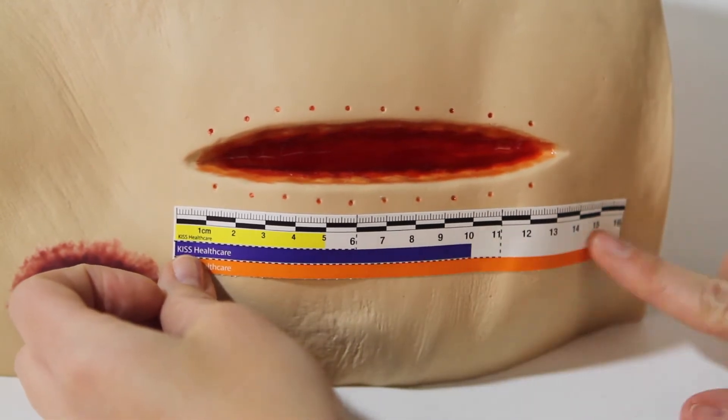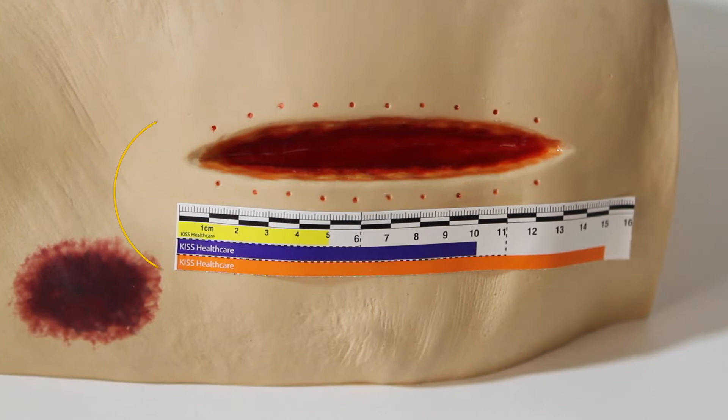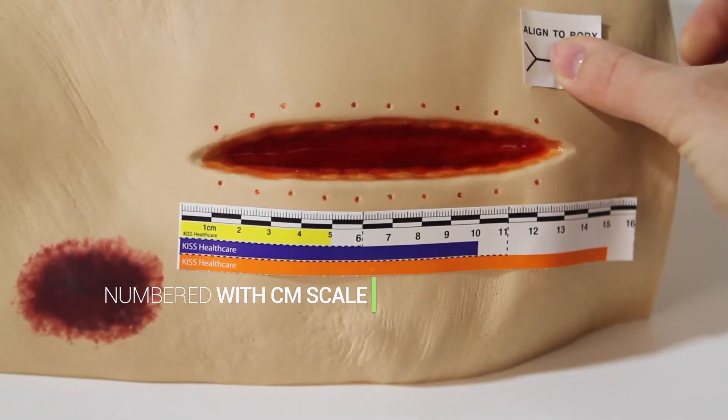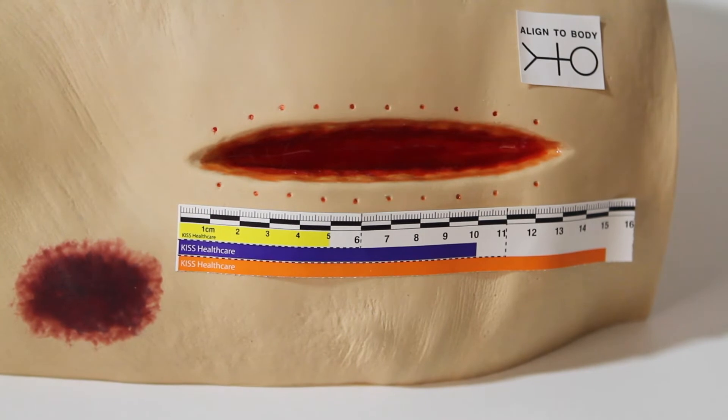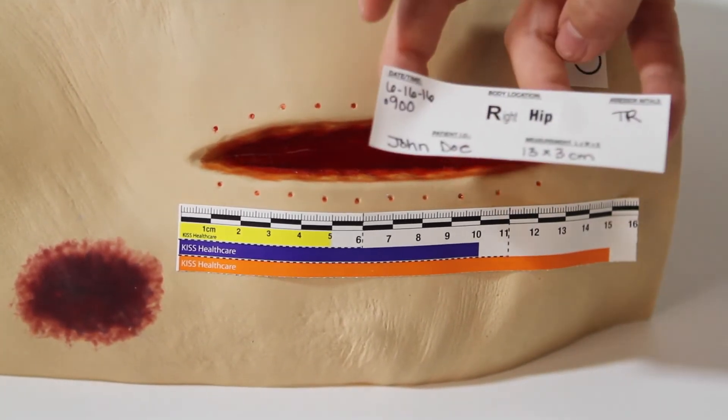Next, place the KISS stick figure next to the wound, aligning the stick figure in the same position as the body. Fill out the note label and apply next to the ruler.